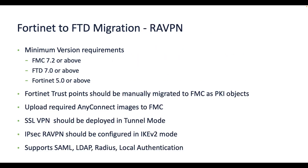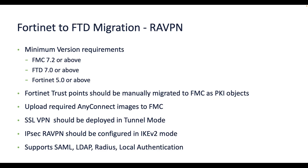This version supports migration of Fortinet Remote Access VPN configuration to FTD. The FMC must be 7.2 or above and FTD should be 7.0 or above. Trust points should be manually migrated to FMC as PKI objects, and any client image should be uploaded to FMC as part of the pre-migration activity. Supported migrations are SSL VPN deployed in TURN mode and IPsec VPN configured in IKEv2 mode. Supported authentication methods include SAML, LDAP, RADIUS and local authentication.